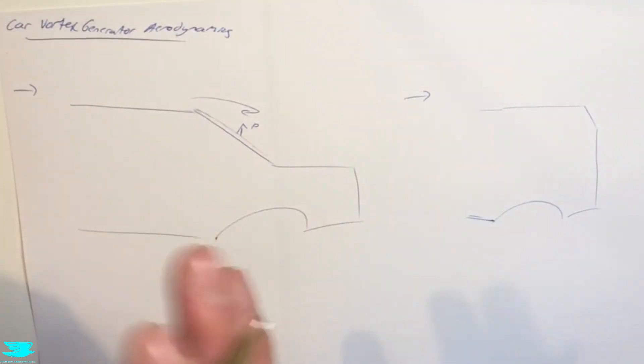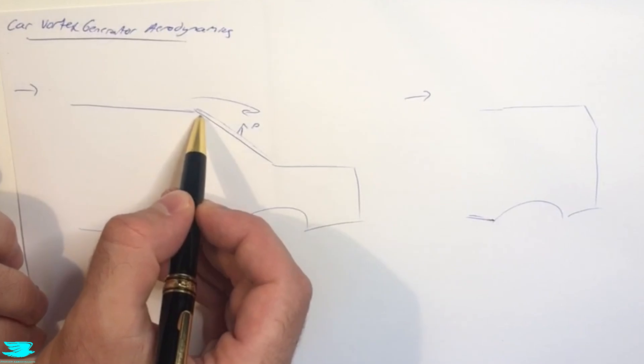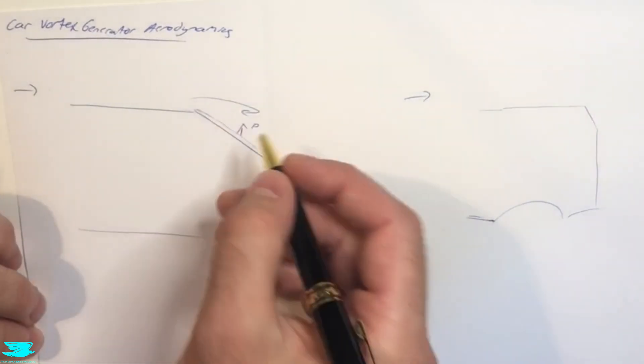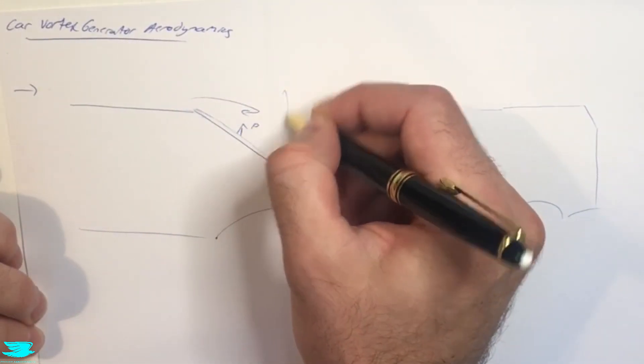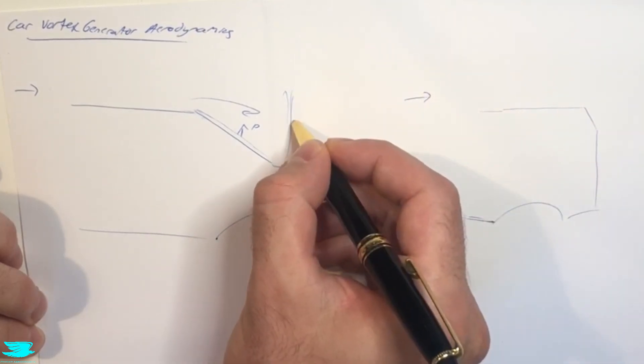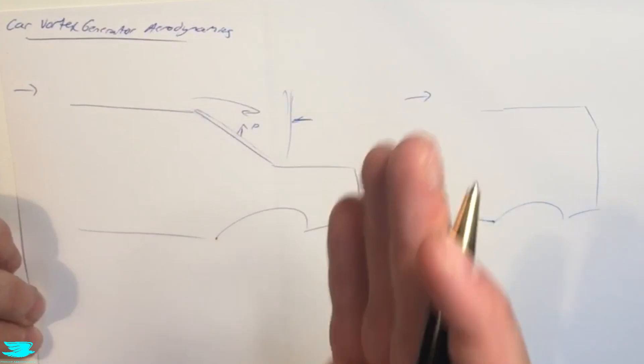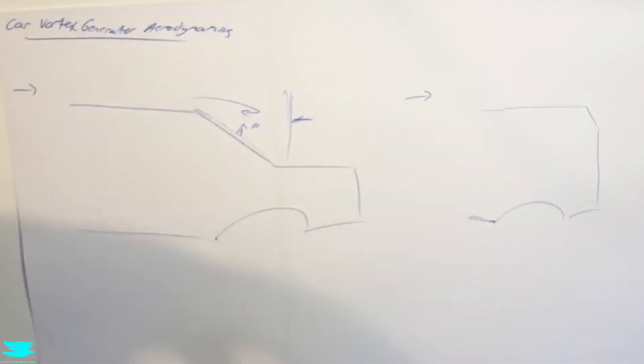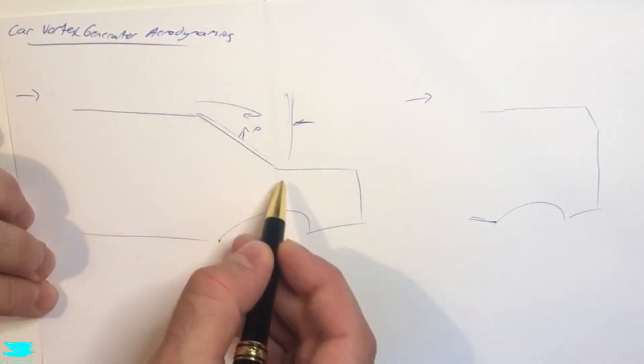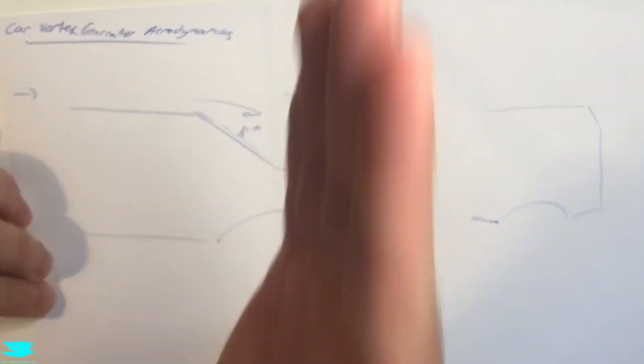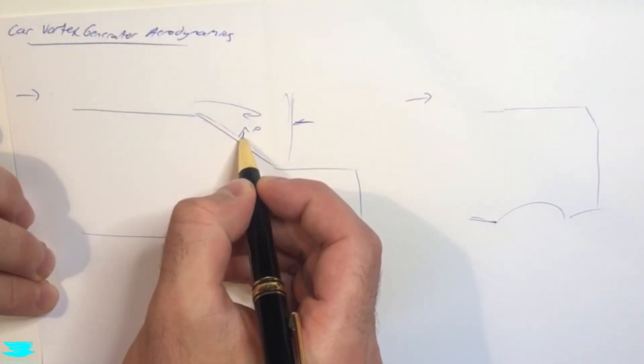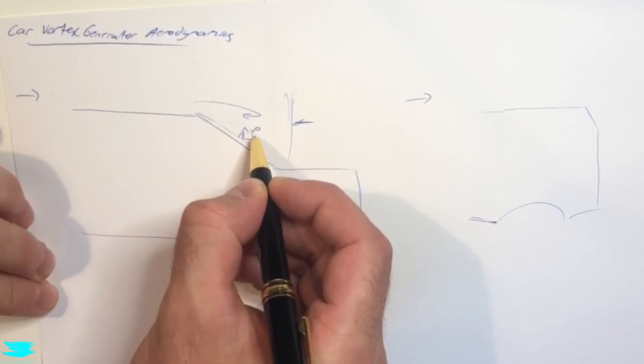But there's more to it than that, it also affects the lift. This rear window here is at an angle, it's not completely straight. If it was completely vertical, then the pressure difference from front to back would manifest itself completely in the drag. But because this is at some angle, there is a component in the lift direction. So the pressure is acting in the drag and also the lift direction.